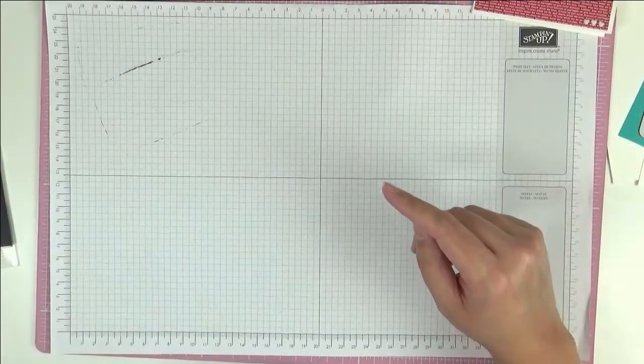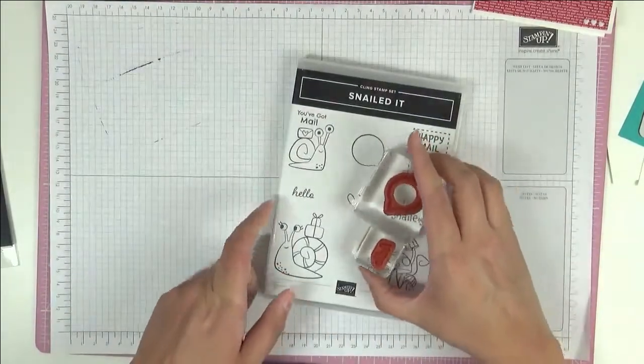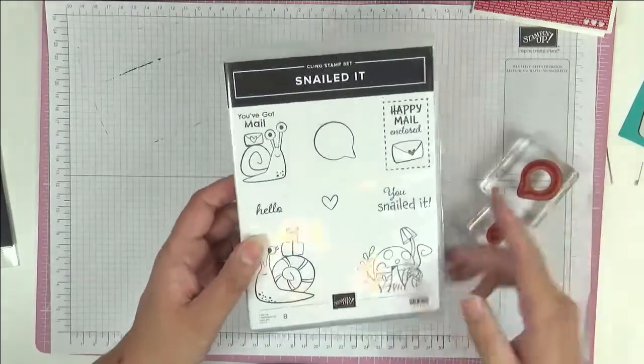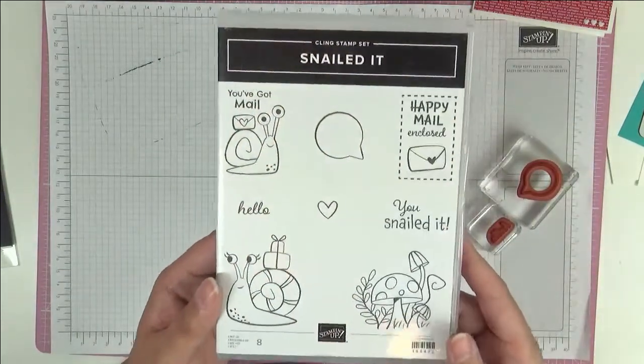So I'm just going to show you very quickly what I should have shown you before. The stamp set. We did do the stamping already, or I did anyway, and the stamp set I used was this one called Snailed It and it's gorgeous as you can see.